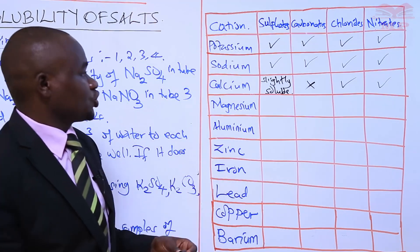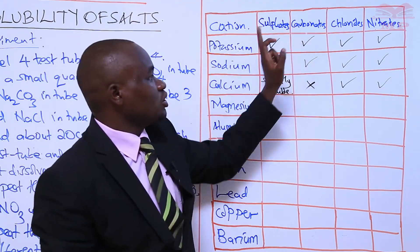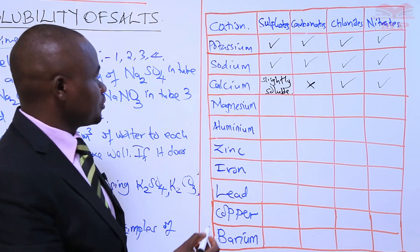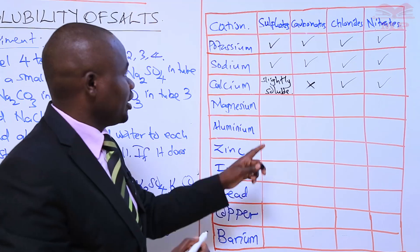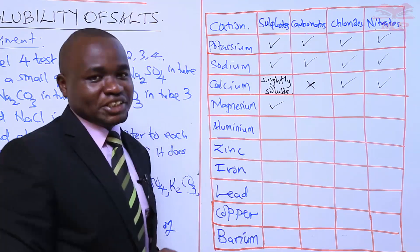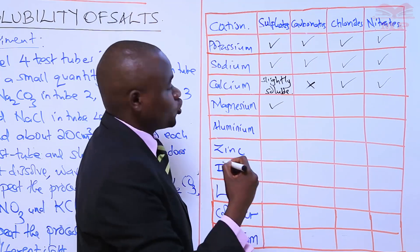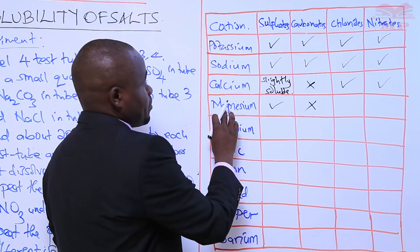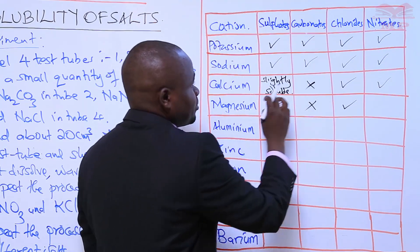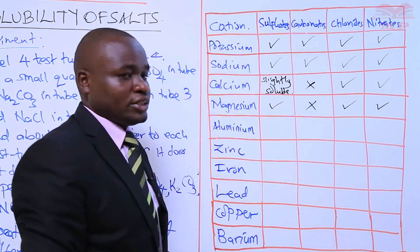Next, we have the salts of magnesium: magnesium sulfate, magnesium carbonate, magnesium chloride, and magnesium nitrate. Magnesium sulfate dissolved in water is soluble — tick. Magnesium carbonate dissolved in water will not dissolve — it is insoluble, so we put an X. Magnesium chloride is a soluble salt — tick. Magnesium nitrate is also a soluble salt — tick.